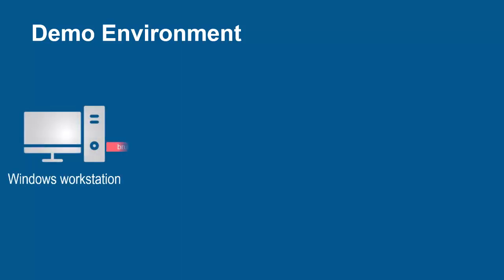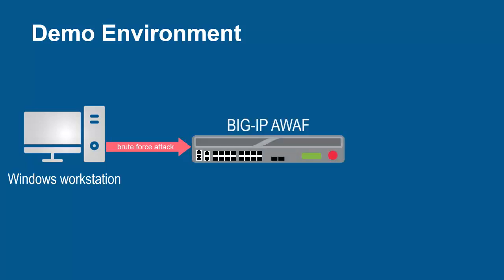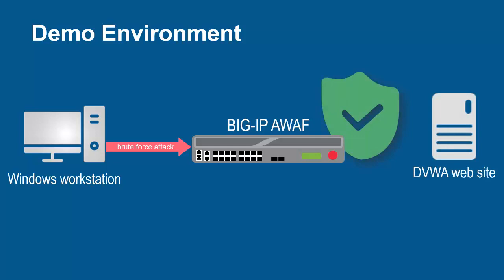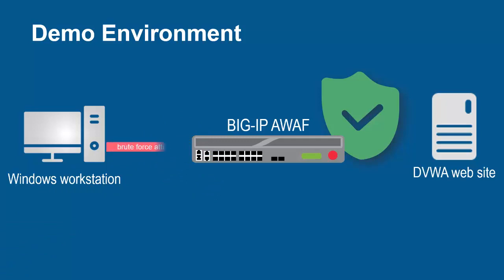The environment for this demo contains three devices. A Windows workstation will be used to submit brute force attack requests that target multiple usernames. These requests will arrive at the F5 BigIP system running Advanced WAF. The BigIP system sits in front of and protects the backend web application. Using its full proxy architecture, it examines every request and can block all brute force attacks, preventing them from going to the backend web servers.